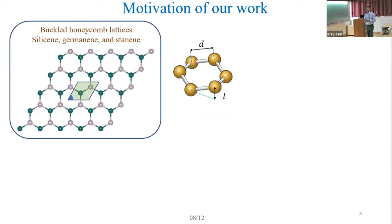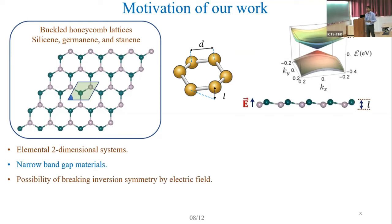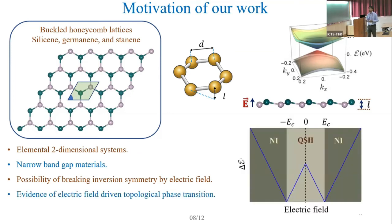We have focused on these elemental buckled two-dimensional honeycomb lattices. Our motivation was this is an elemental two-dimensional system with a very narrow band gap, so we expect a large Berry curvature associated with that narrow band gap. There is a possibility of breaking inversion symmetry because of this buckling - electric field will assign different mass terms to neighboring atoms. The electric field will lead the system from topologically non-trivial to topologically trivial, giving us a topological phase transition. We want to explore the effect of this topological phase transition on the Berry curvature dipole. Finally, these systems are experimentally realizable.